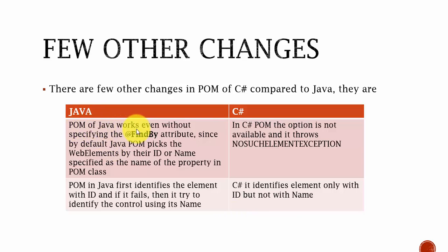One difference is that in Java POM it works fine even if you don't specify the @FindBy attribute, because by default Java POM picks web elements by their ID or name as specified in the property name in the POM class. In C# that same option is not available — it throws a NoSuchElementException. Similarly, Java POM first identifies the element using its ID and if that fails, tries the name, whereas in C# POM it identifies the element only by ID, not by name.